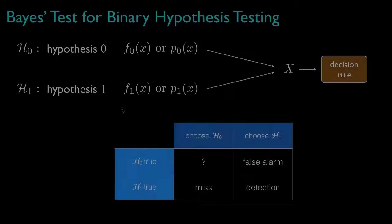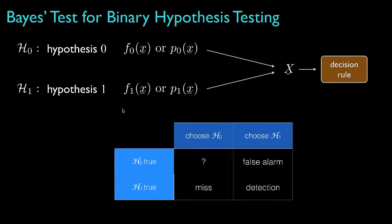Let's start with our standard scenario for a binary hypothesis test, where we have probability density or mass functions for each hypothesis, and we design a decision rule to classify the data into each hypothesis so that we will have one of four situations: a detection, where we choose H1 and H1 is true; a false alarm, where we choose H1 and H0 is true; a miss, where we choose H0 when H1 is true; and a situation where we choose H0 and H0 is true.